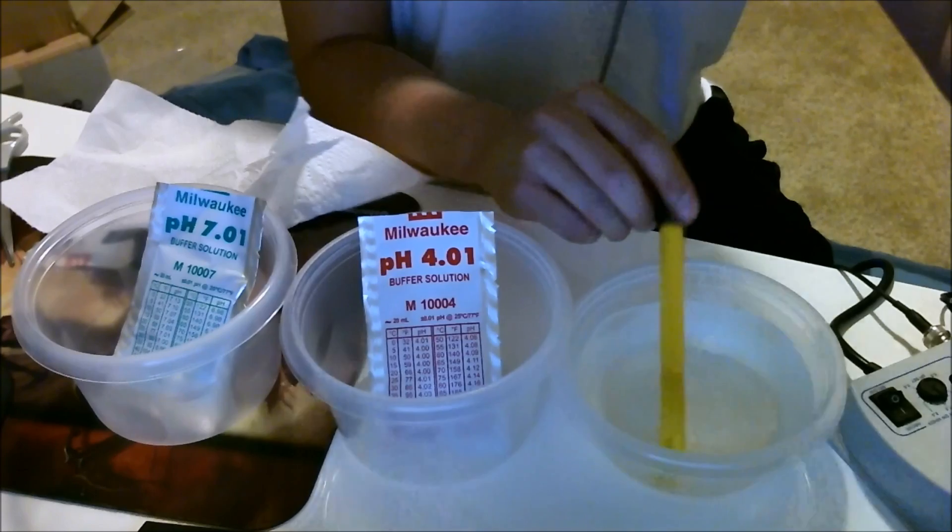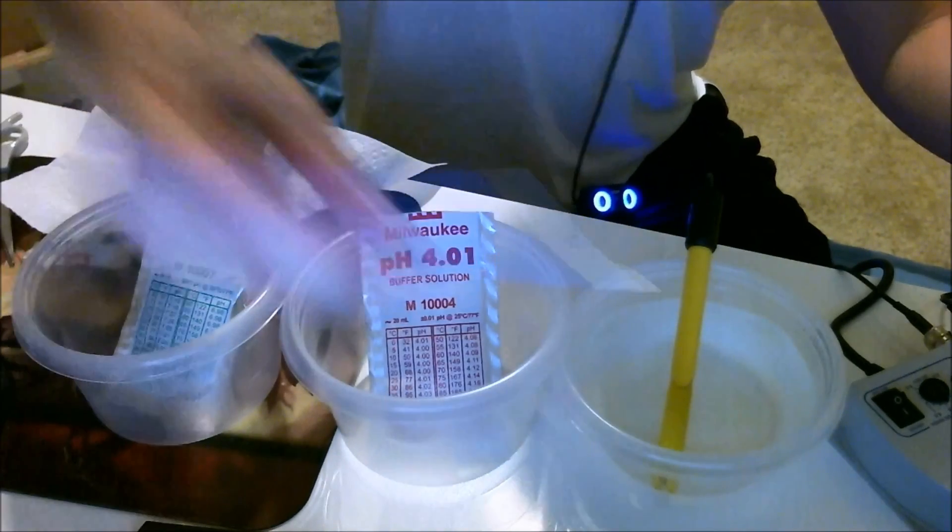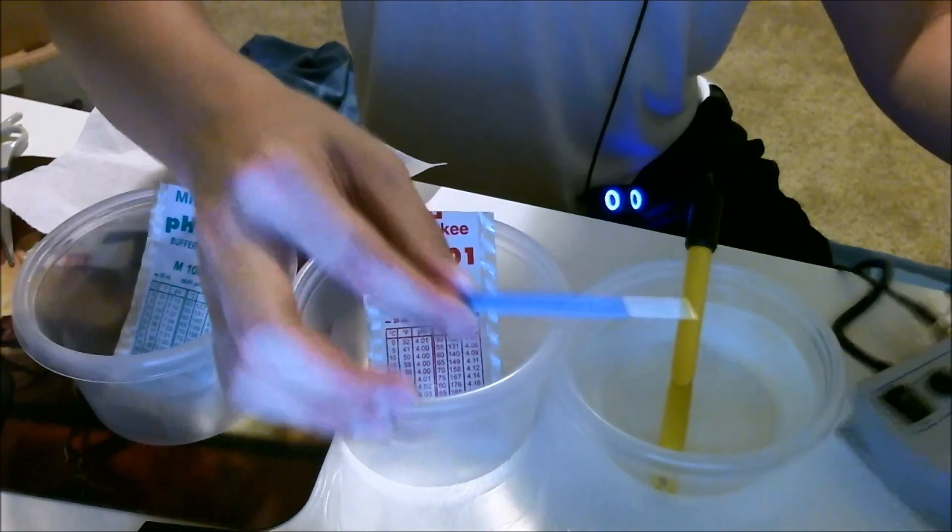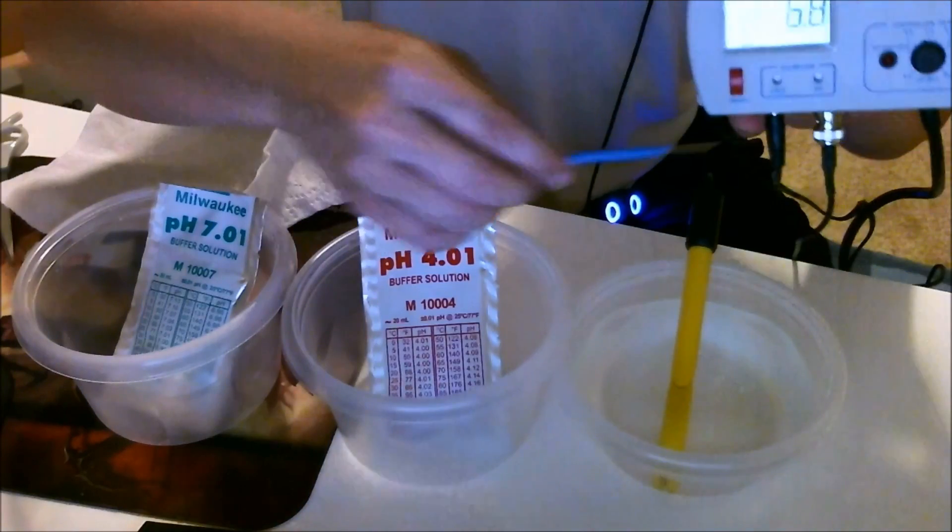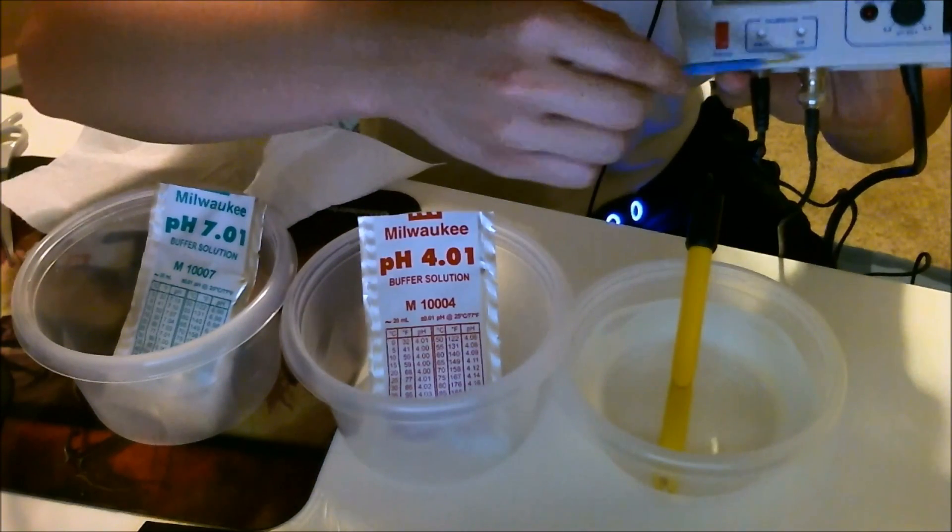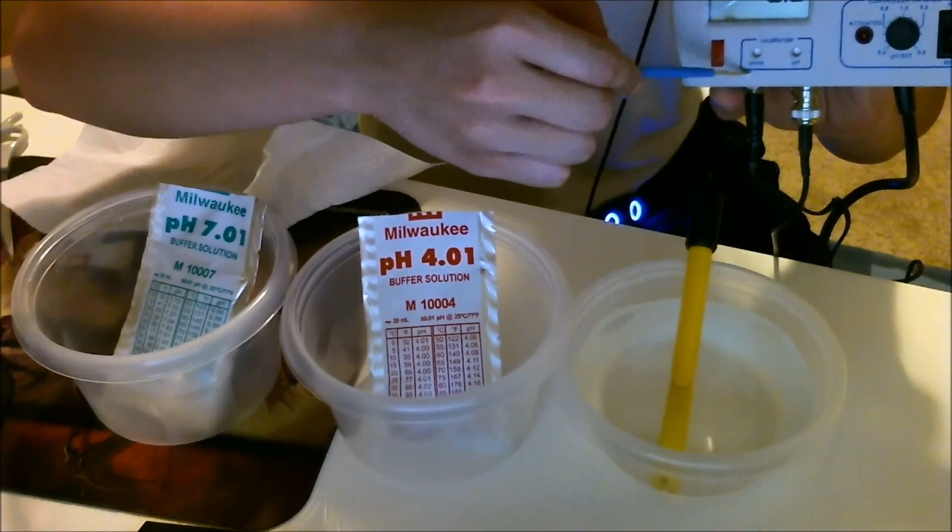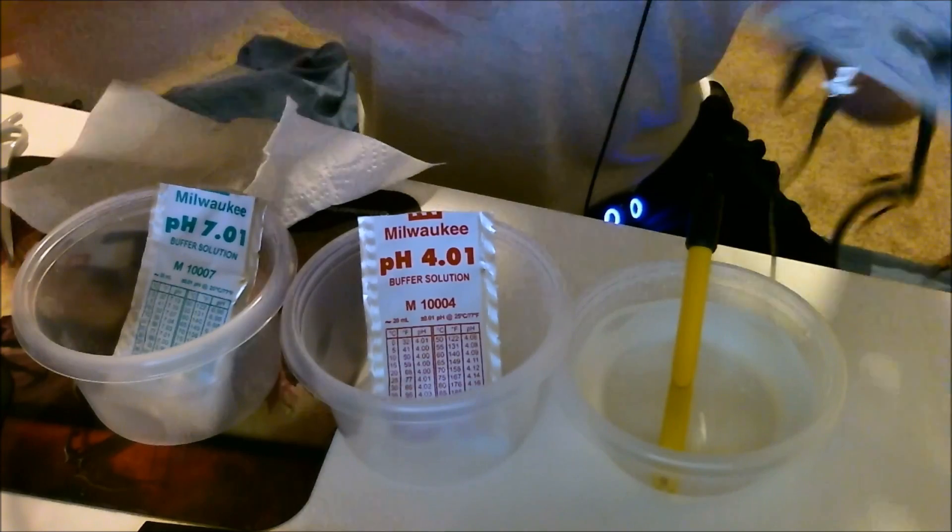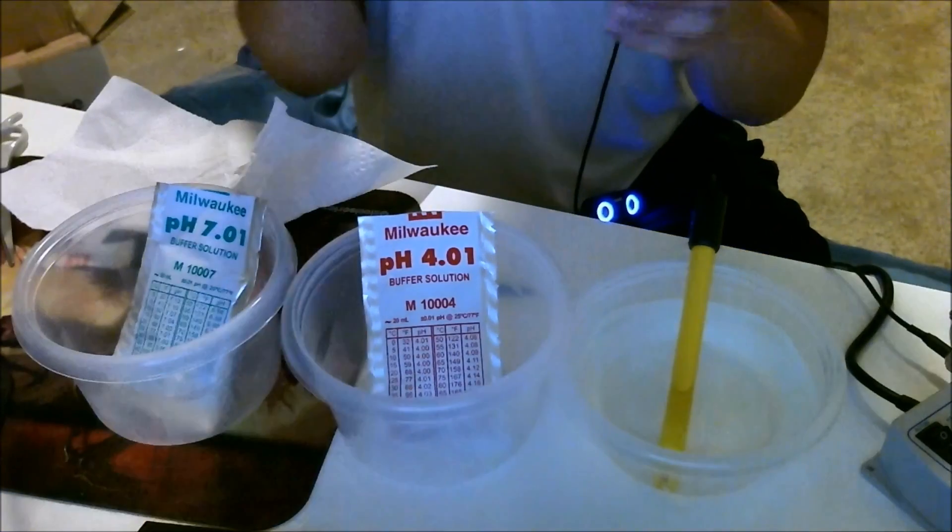Let's calibrate this. What you'll need is the tool that came with the controller, and you're going to be screwing these two screws down here. This is the 4.0 and this is the 7.0. Let's read the instructions real quick.